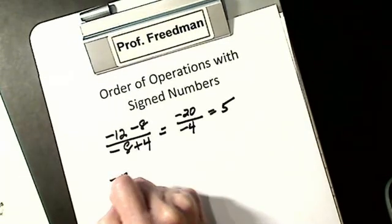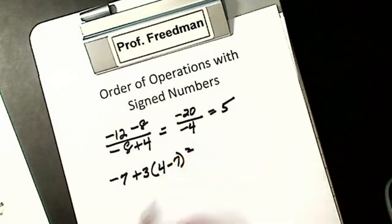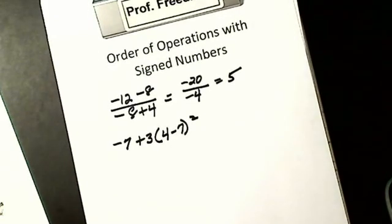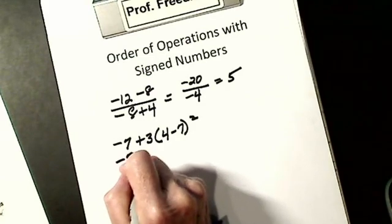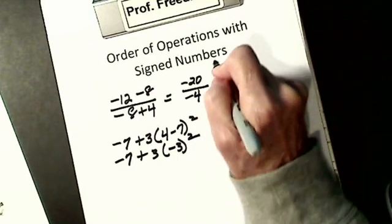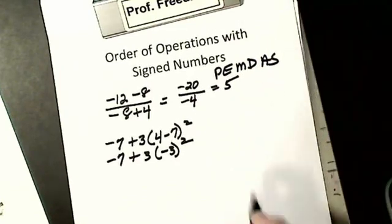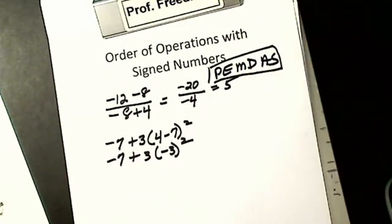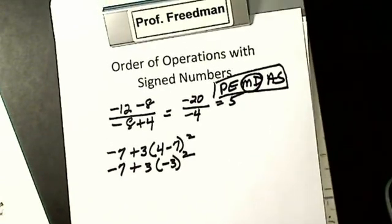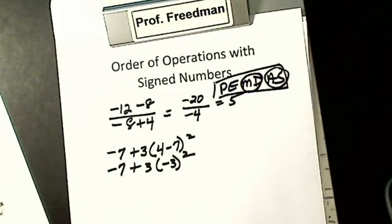Let's say I have negative 7 plus 3 times 4 minus 7 squared. Order of operations says to do what's in parentheses first. Order of operations is PEMDAS: parentheses first, then exponents, then multiplications or divisions as they appear from left to right, then addition or subtraction as it appears from left to right.